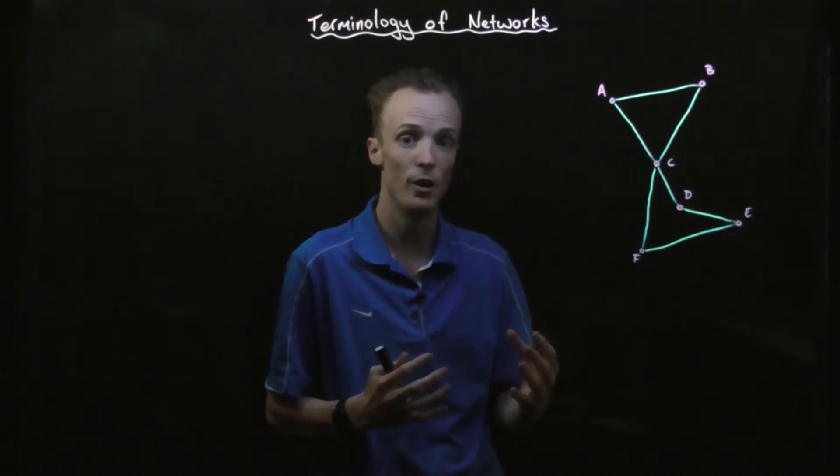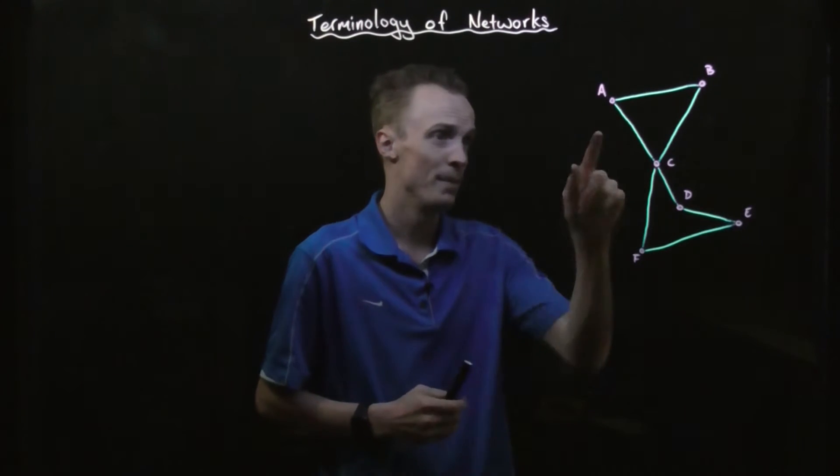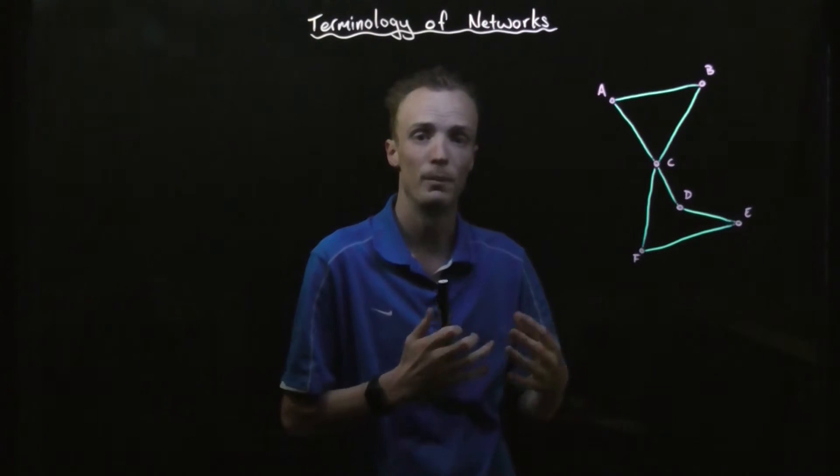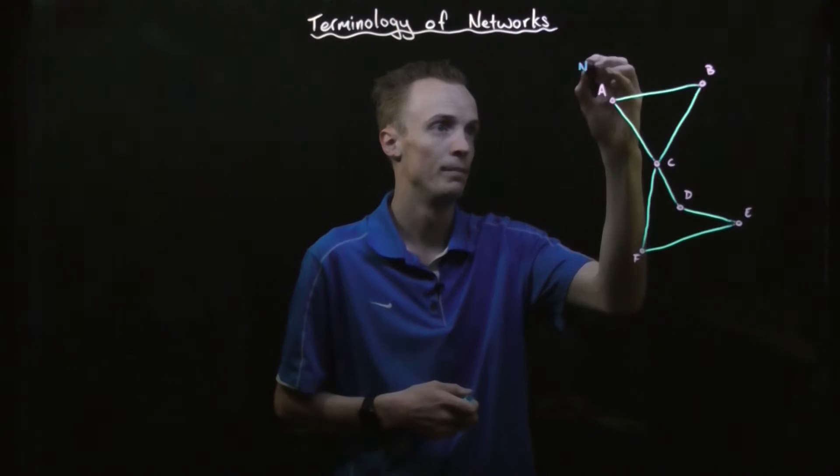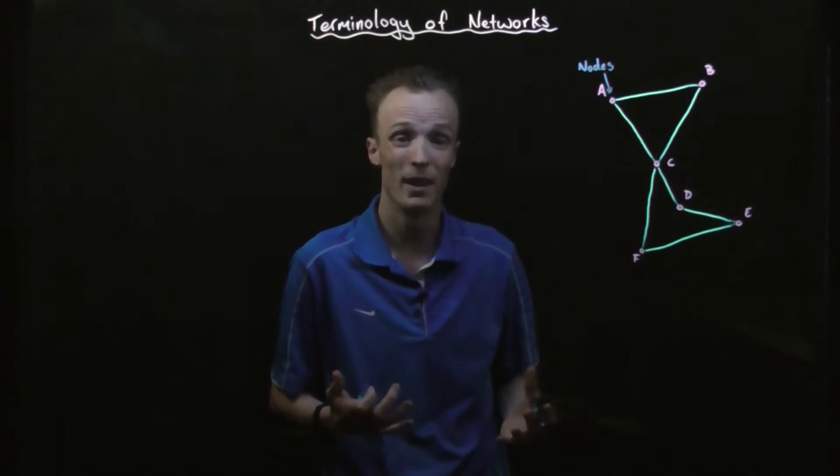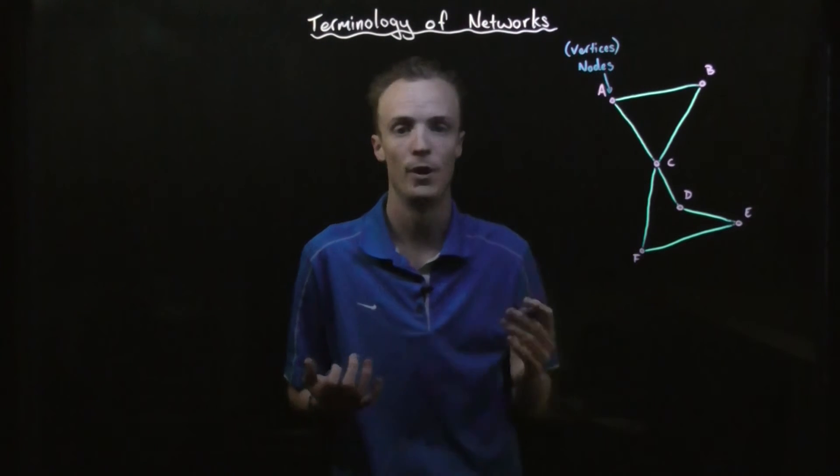Now there are some special words that we use to describe specific things on this network. For example, in the network, at each one of these points, we refer to the points themselves as nodes, which can sometimes also be referred to as vertices.